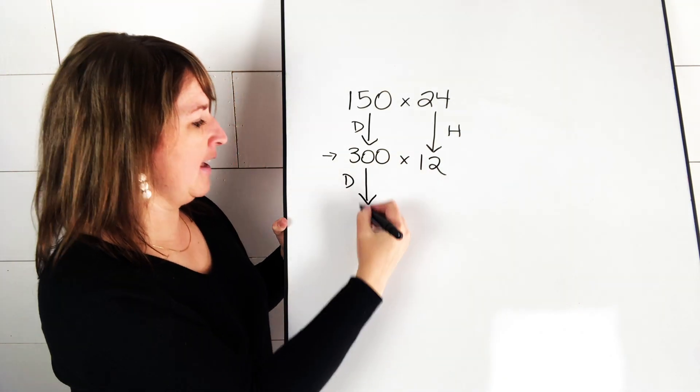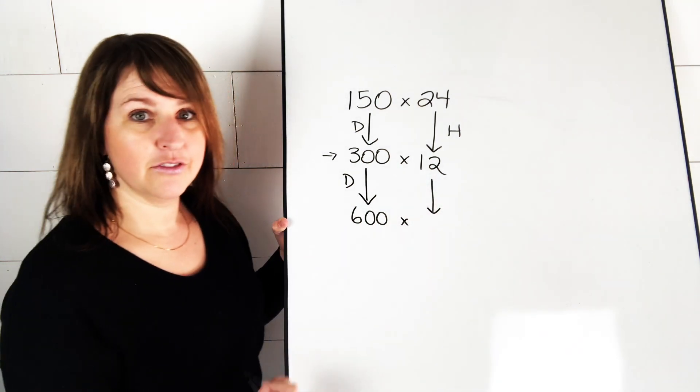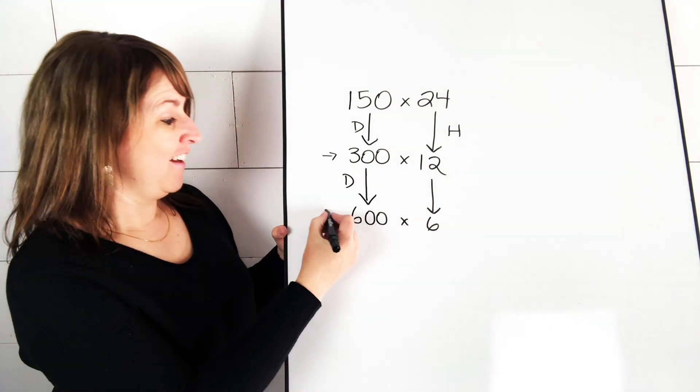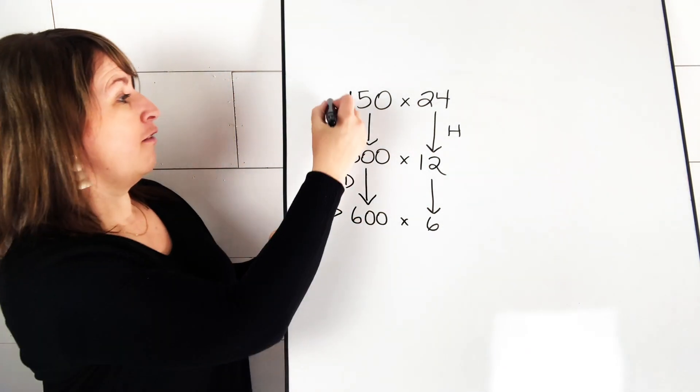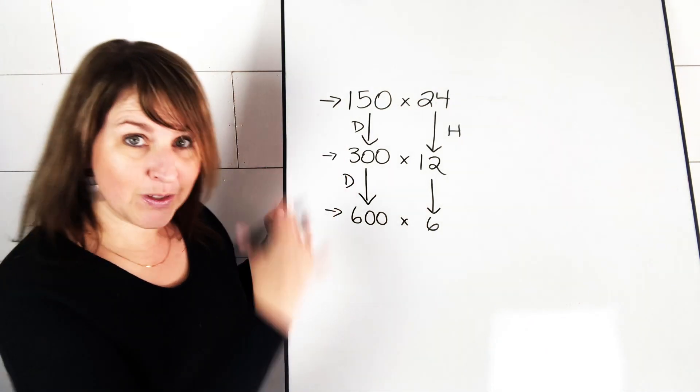So let's double this side again to make 600. And now we divide this one in half to make 6. Now we have 600 times 6. Again, way easier to solve than that one. Let's do another step yet.